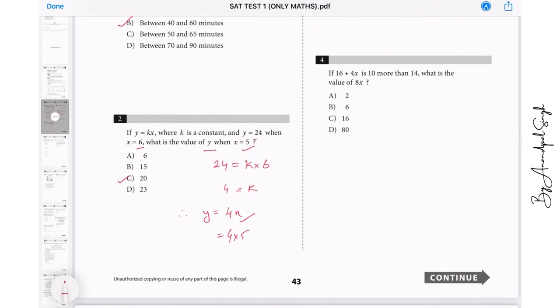Going to question number four. Since this is a time test, we will try and finish this in the allotted time. Question number four: 16 plus 4x is 10 more than 14. What is the value of 8x? We need to find 8x. So first of all we find what is 4x. This is 24, so 4x will be equals to 8, then multiplying by 2 on both sides, this is equal to 16.